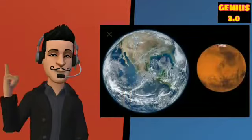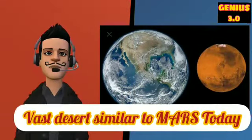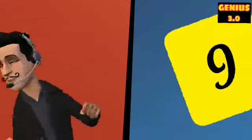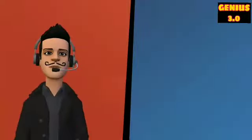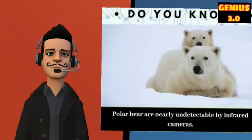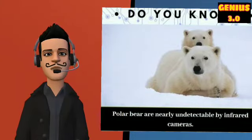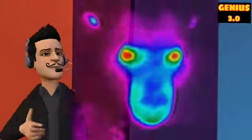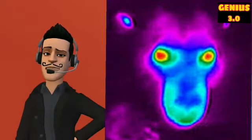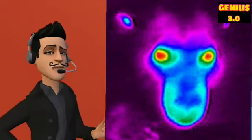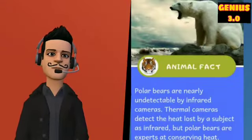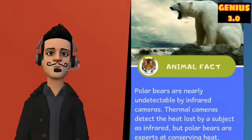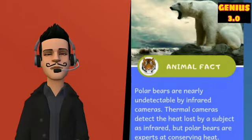Our planet will become a vast desert similar to Mars today. The ninth interesting fact is polar bears are nearly undetectable by infrared cameras. Thermal cameras detect the heat lost by a subject as infrared, but polar bears are experts at conserving heat. The bears keep warm due to a thick layer of blubber under the skin.